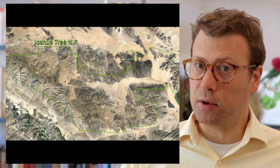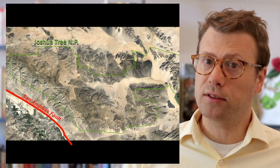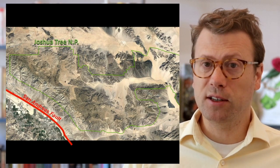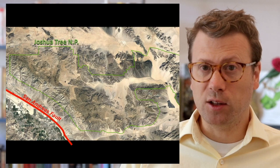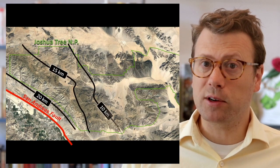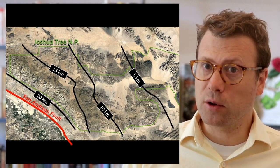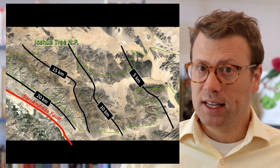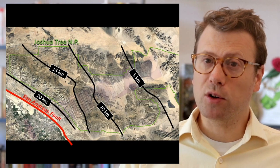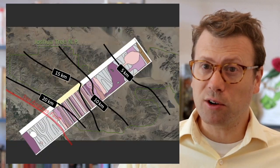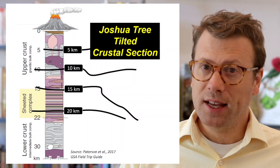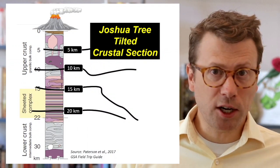The new fault system appears to splay off the main San Andreas Fault in the vicinity of Joshua Tree National Park. The jostling of the crustal blocks in the park has caused the west side of the park, the side closest to the San Andreas Fault, to be uplifted and tilted. The igneous rocks on the west side of the park were once located around 20 kilometers deep inside the earth, while the igneous rocks on the east side of the park were located around 5 kilometers. Geologists call this type of exposure a crustal section — like taking a slice or cross section into the earth. Tilted crustal sections like Joshua Tree provide invaluable information on what continental arcs look like inside the earth.